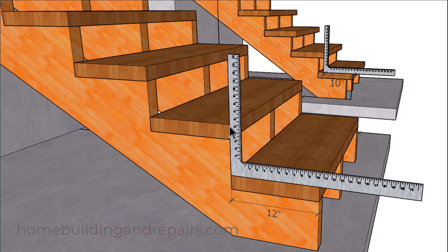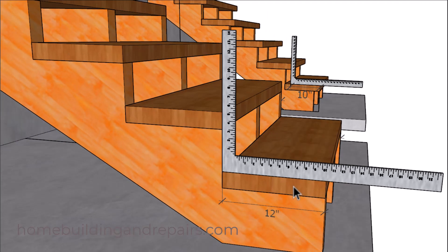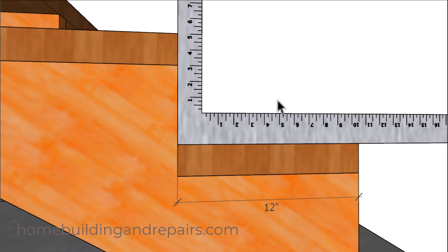Now the building codes often refer to the farthest protrusion forward on each one of the steps. So if we just take our framing square and we lay it on top of a level step, like we did here, then all we need to do is measure that length.